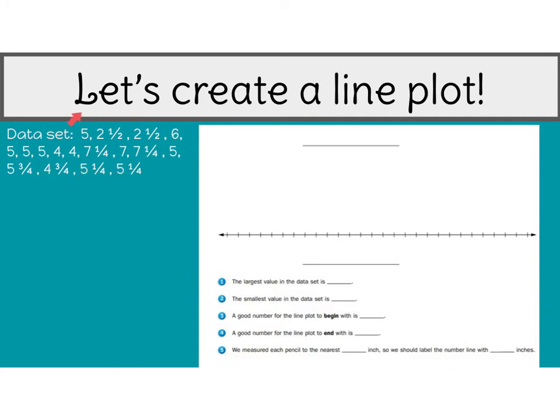So here, on this side, we have what's called a data set. And over here, we kind of have an outline of what a line plot is going to look like. Now, this data set is going to be pencil lengths. So I didn't tell you that at the beginning, but we're going to tell you that now. So all of those numbers are going to represent how long pencils are in this data set. So the first thing that we need to do is we need to come up with a title. And that's one of the requirements for a line plot is you have to have a title. So at the very top on this line, I'm just going to make my title pencil lengths.